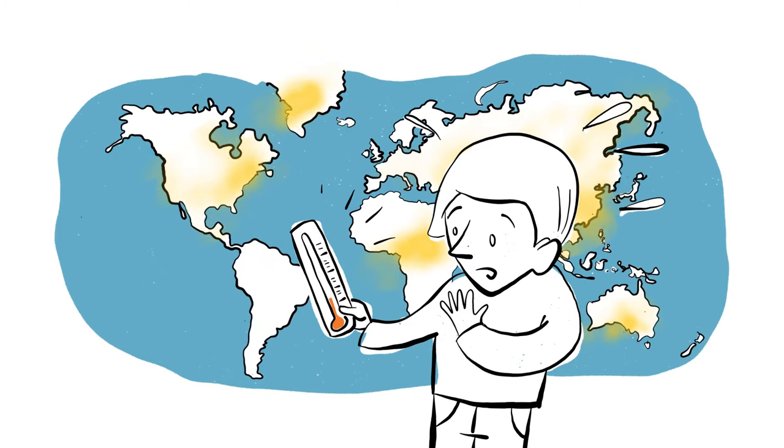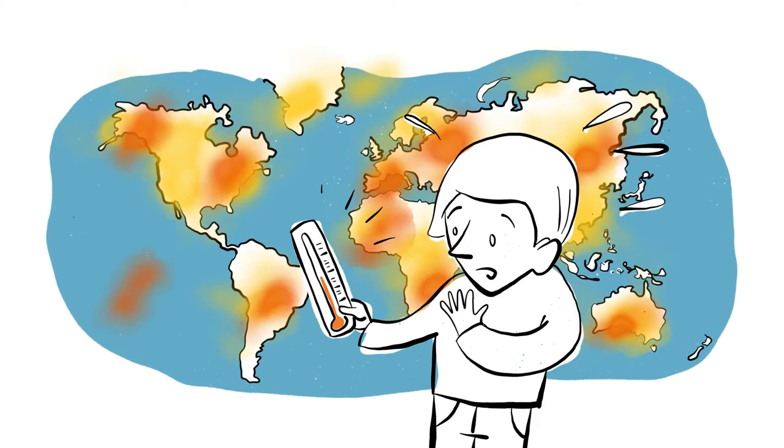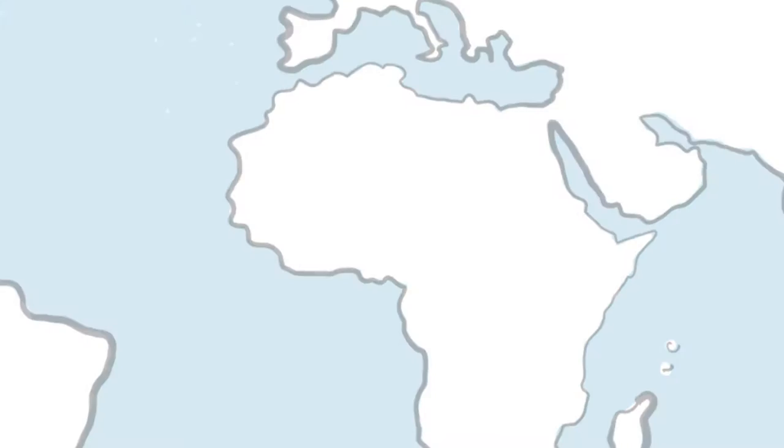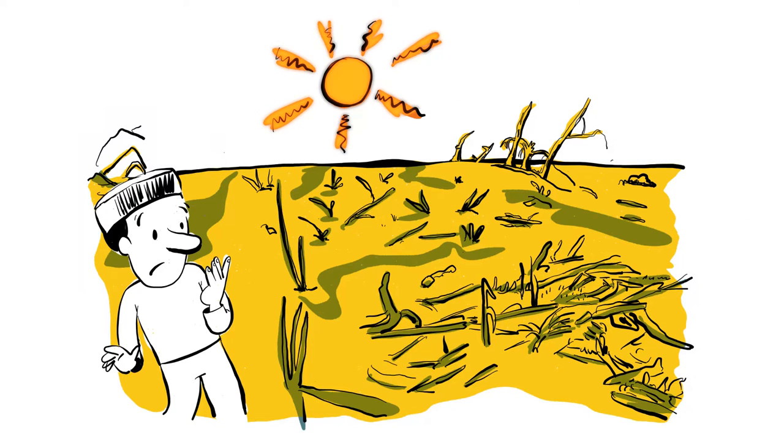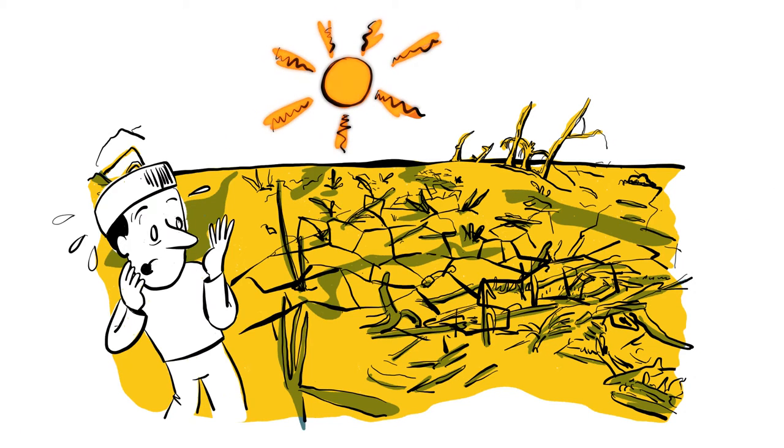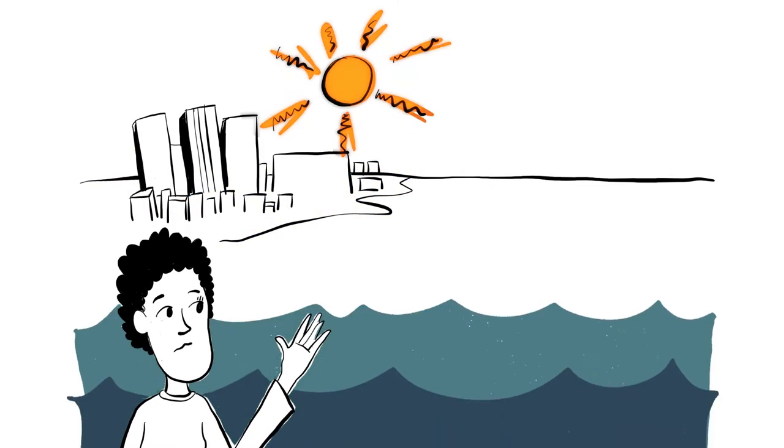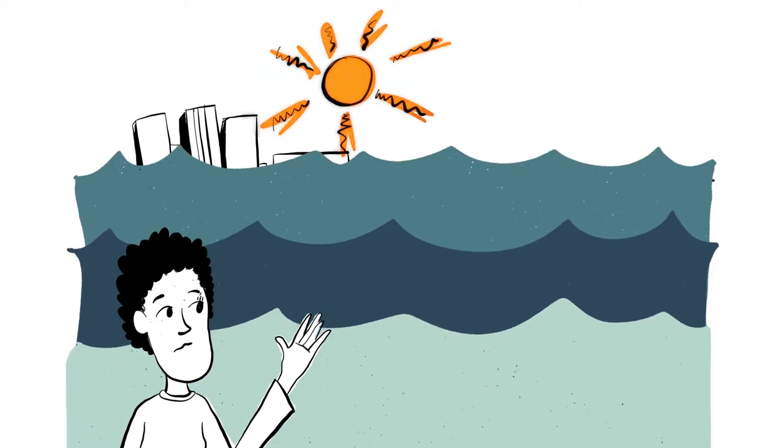Climate change already leads today to irreversible losses and damages. It hits especially hardest the poorest living in the countries of the global south. Swaths of land have become deserted, islands are sinking, and entire cities might one day become unlivable.